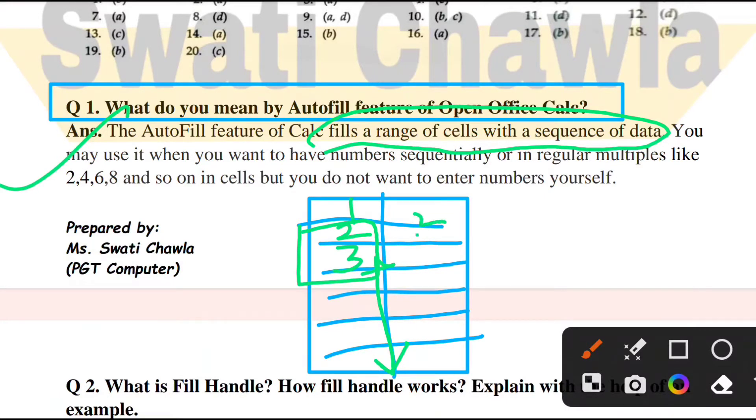Now read the definition: The AutoFill feature of Calc fills a range of cells with a sequence of data. Whatever sequence follows like 2, 4, 6, 8, when you select and drag, the sequence 2, 4, 6, 8, 10, 12, 14, 16 will be created. Similarly, if you write Jan, Feb, March, April and drag, a sequence of month names will be created. You may use it when you want numbers sequentially or in regular multiples, or months' names, days' names.